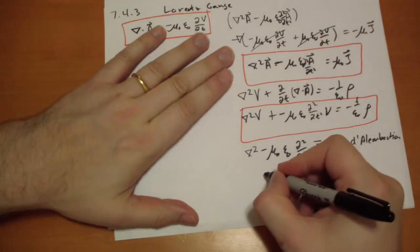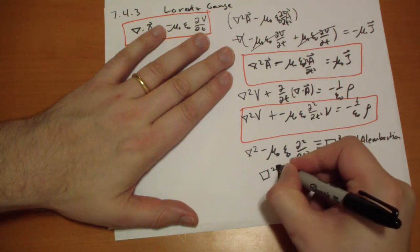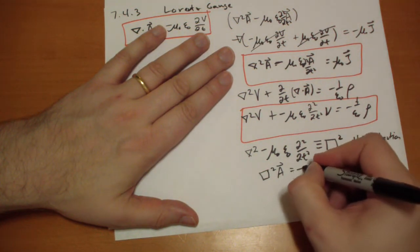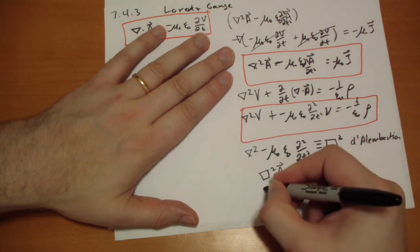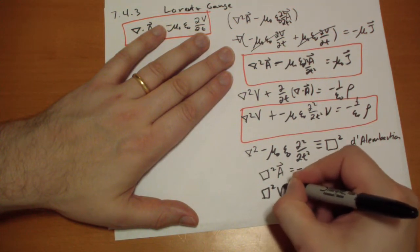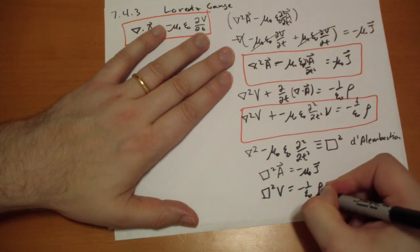And so with the d'Alembertian, we can write these two equations out as the d'Alembertian of A is equal to minus mu naught J vector, and the d'Alembertian of V equals minus 1 over epsilon naught rho.